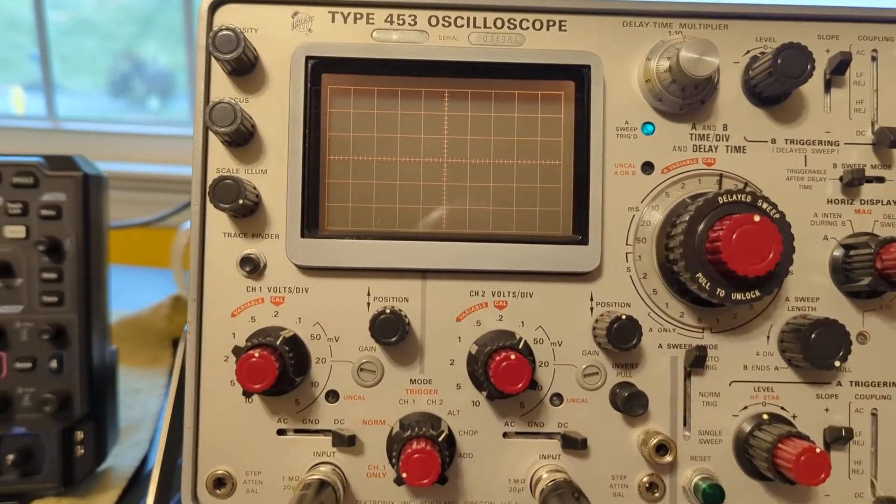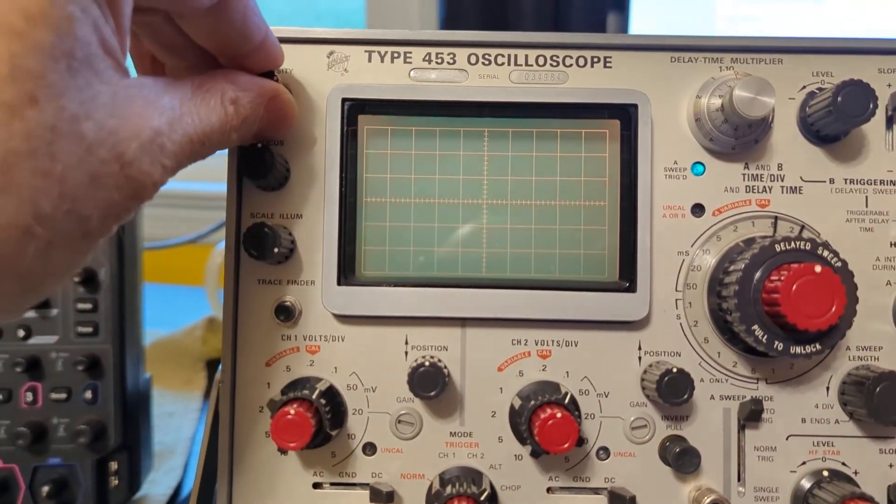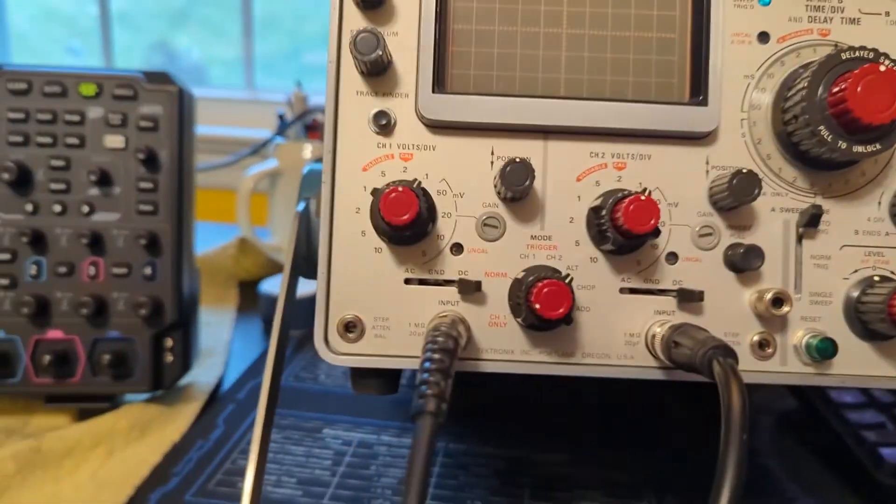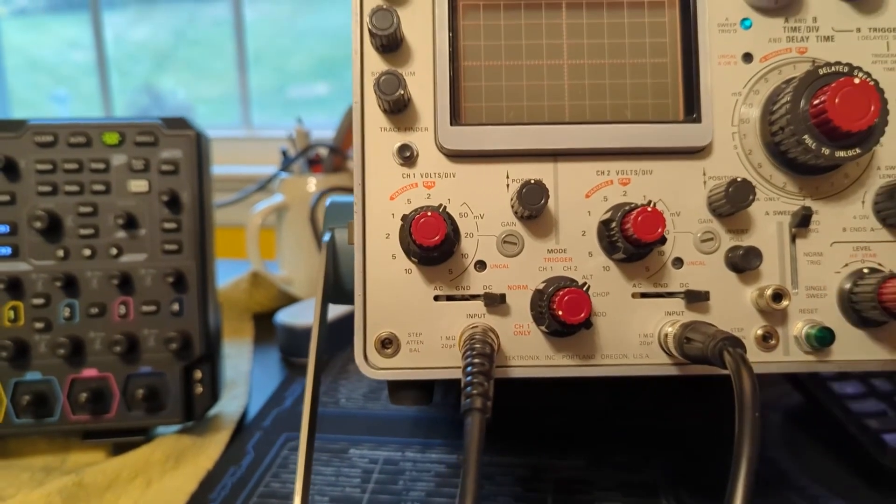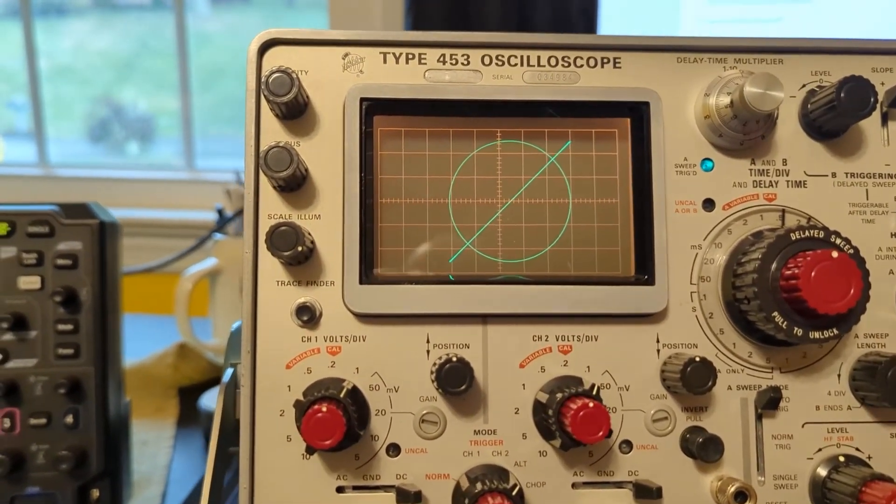But what's actually happening is you have to turn the intensity up to see the XY. So I will move this over, and we've got this sort of strange symbol with the intensity up a bit.